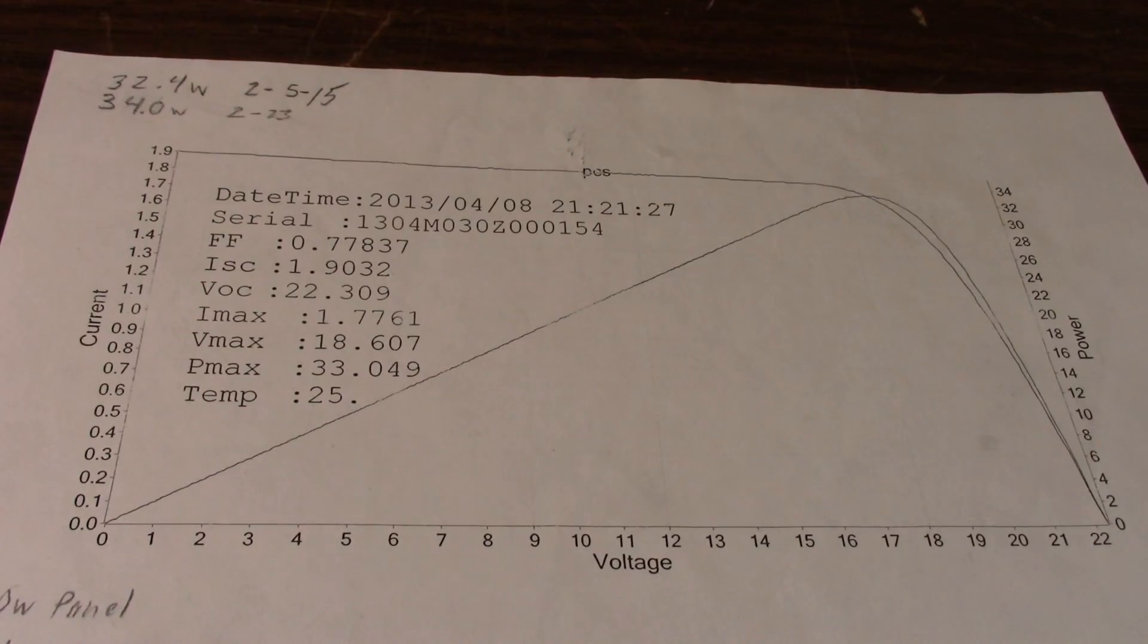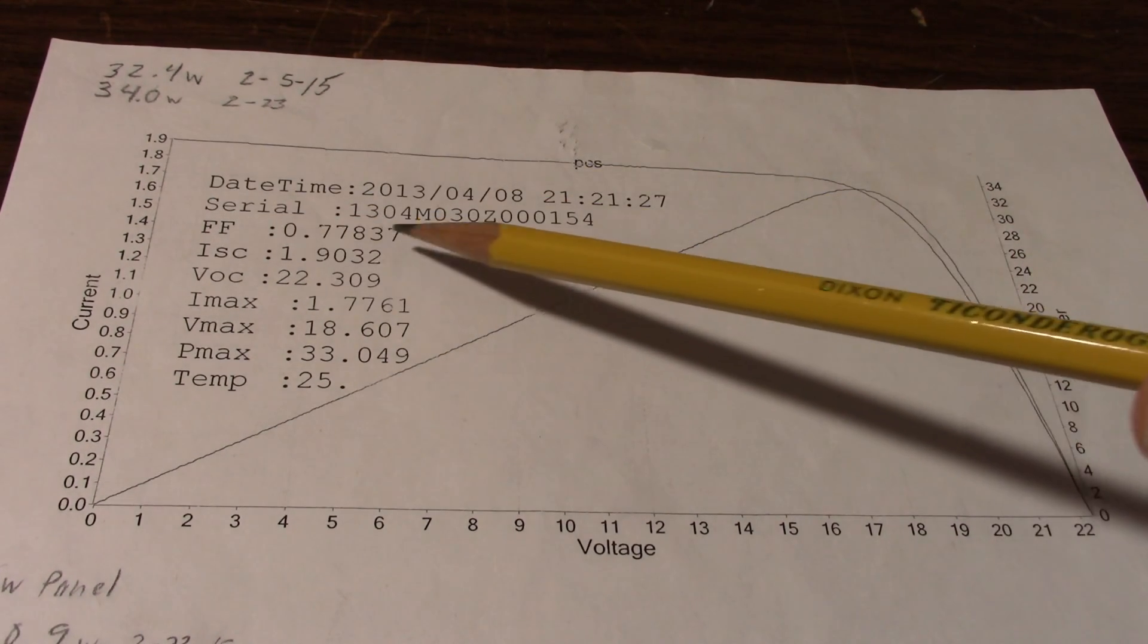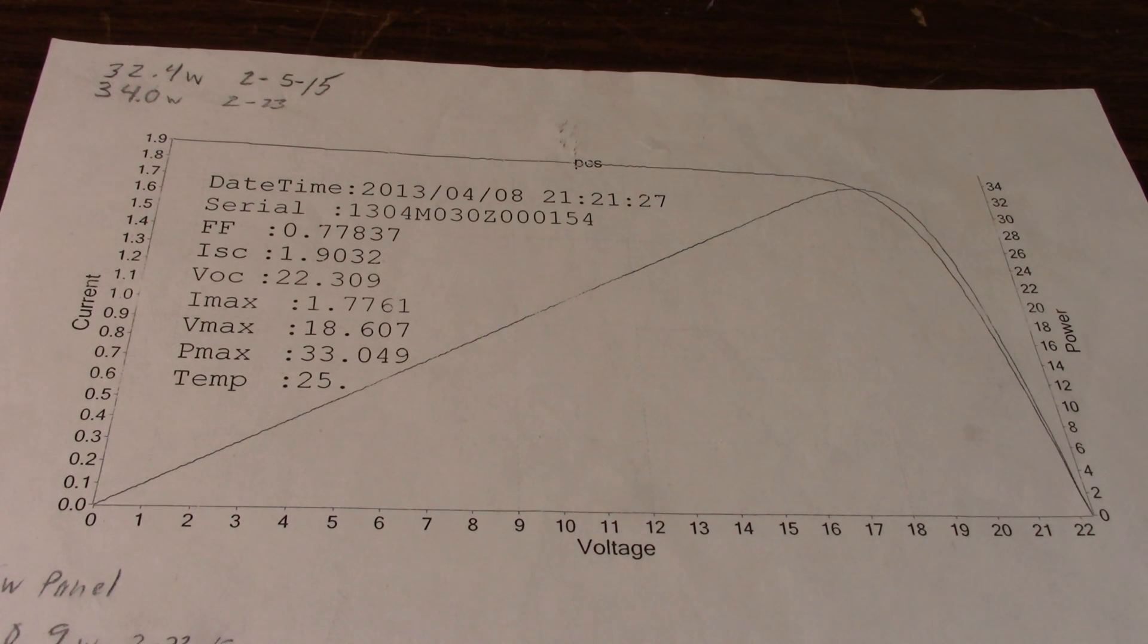Here's a graph of a solar panel I purchased a few years ago. It's a 30 watt panel and they included this data along with it. So it should match the serial number and everything right here on the actual panel that I bought. However they don't always include these.